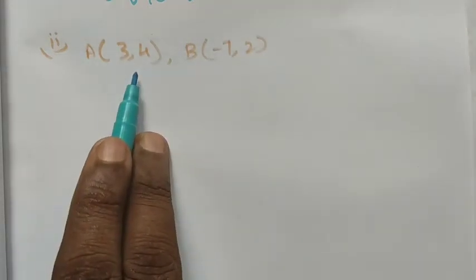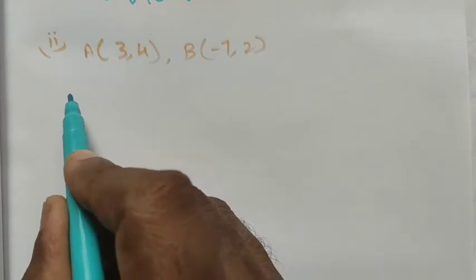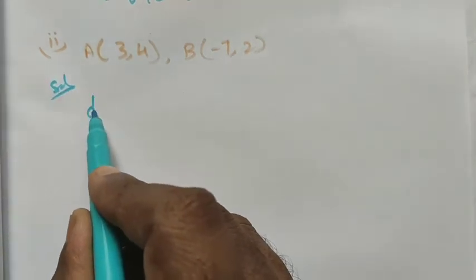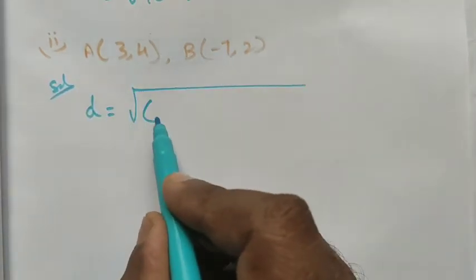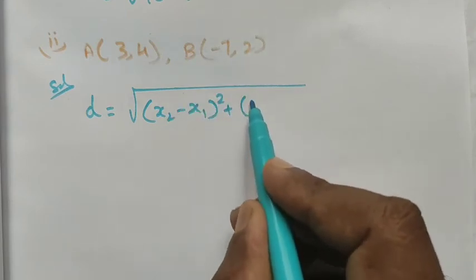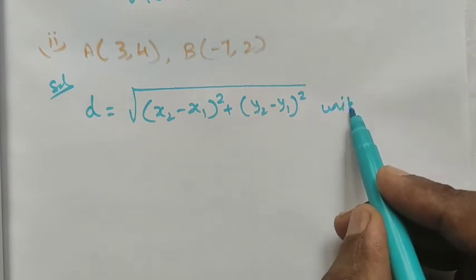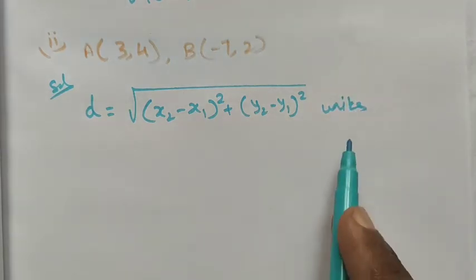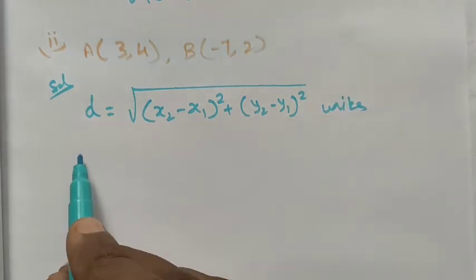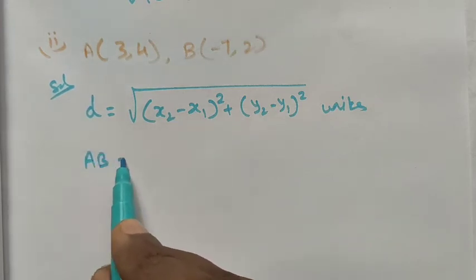The second roman numeral is (3,4) and (-7,2). Here also we use the same formula: the distance d = √((x2-x1)² + (y2-y1)²) units. Because we are finding the distance, there must be units.